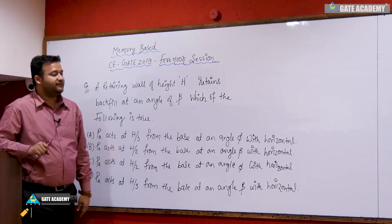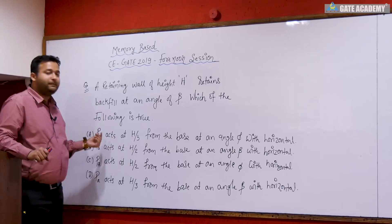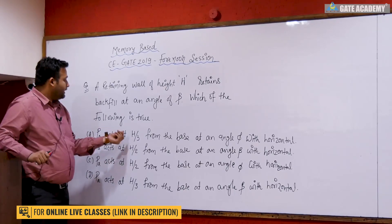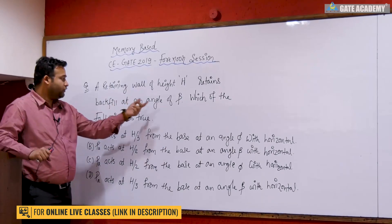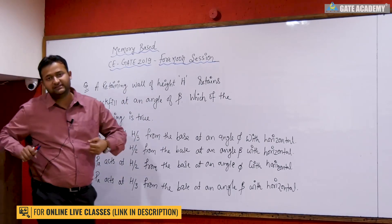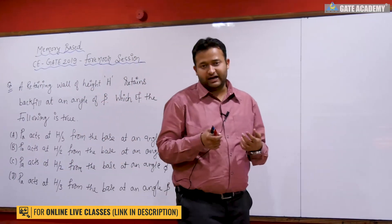...5 with the horizontal, where PA is the active earth pressure or active earth force, h is the height, beta is the angle of backfill, and phi is the angle of shearing resistance. This question was asked and I need to choose the correct statement.